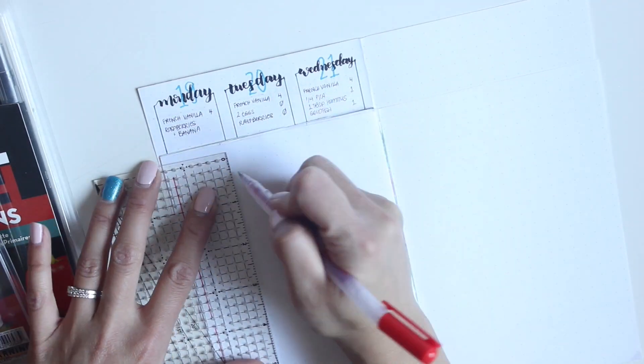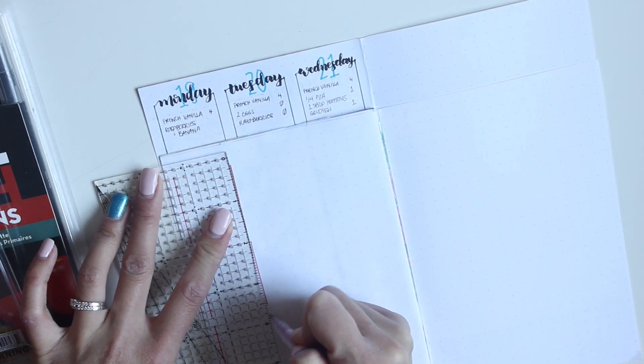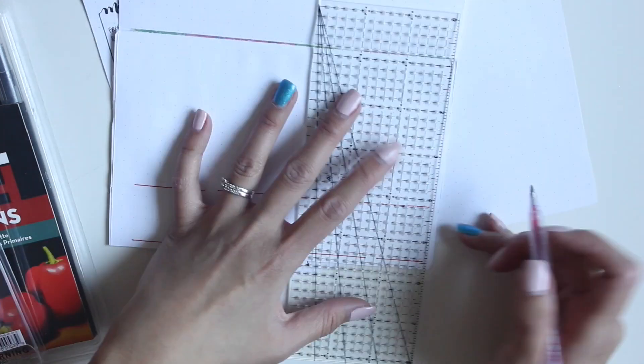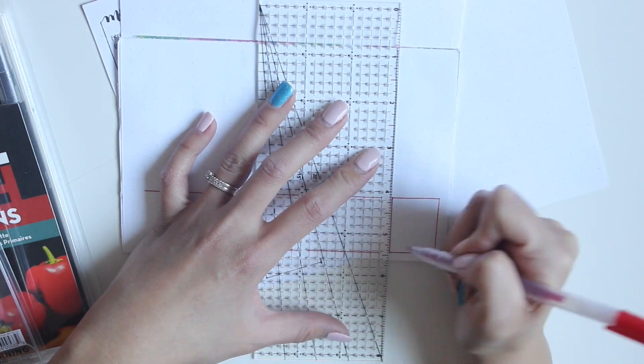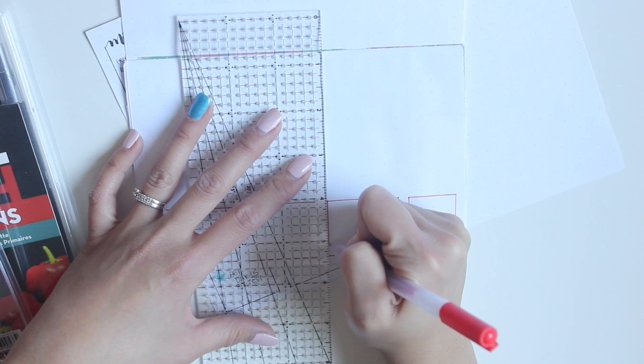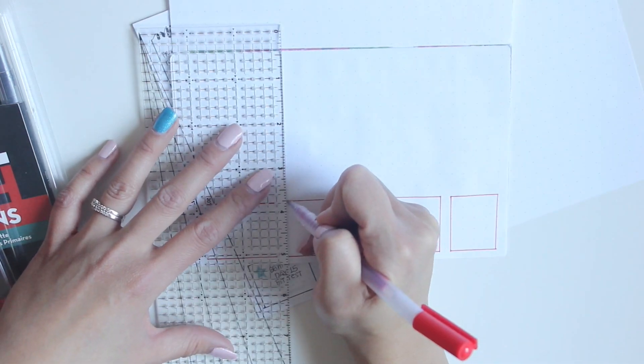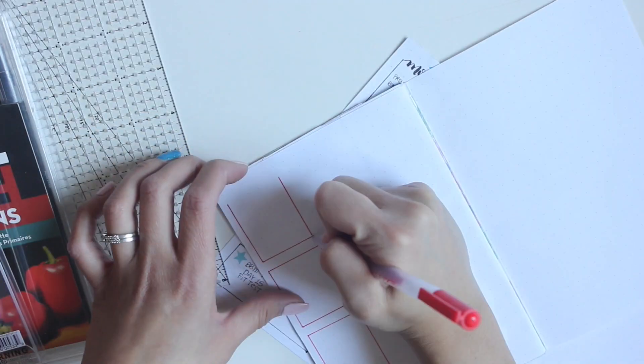So now I guess the creative process is being able to decorate it so that it looks different every week and that I'm challenging myself every week. Because I think once you found a spread, especially with bullet journaling, if you found a spread that works for you and it's functional, why change it?